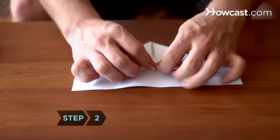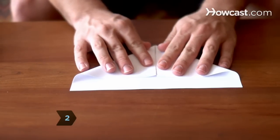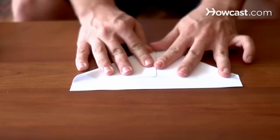Step 2. Fold the two corners of the folded edge in toward the middle to form a point.